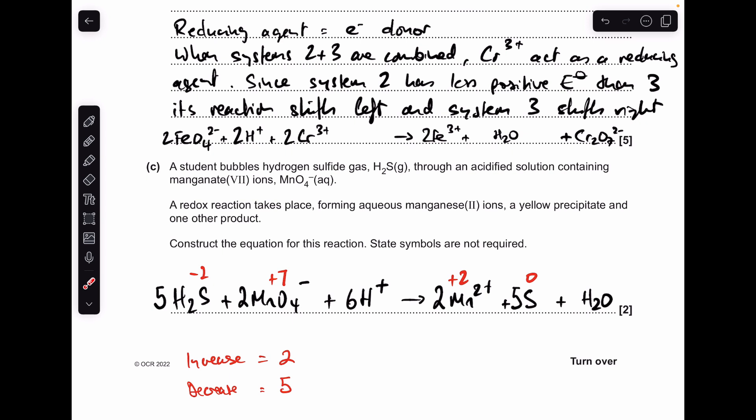The final thing we need to do now is just work out what number goes in front of the H2O. We can use the hydrogens - two fives is 10 plus 6 is 16, so we need 8 in front of the H2O.